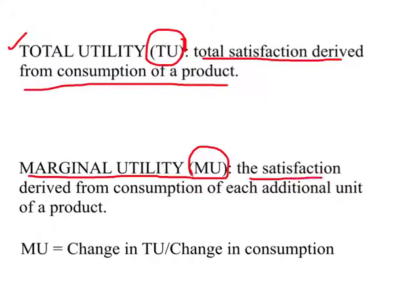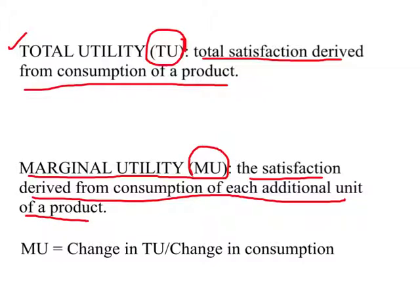Marginal utility (MU) is the amount of satisfaction derived from consumption of each additional unit of a product. For example, when I consume one apple, the satisfaction I receive from that first apple is its marginal utility. I consume the second apple and get a marginal utility from that. We can also figure out the total satisfaction received from eating two apples, which is total utility. Total utility is the total satisfaction from consumption of a product.